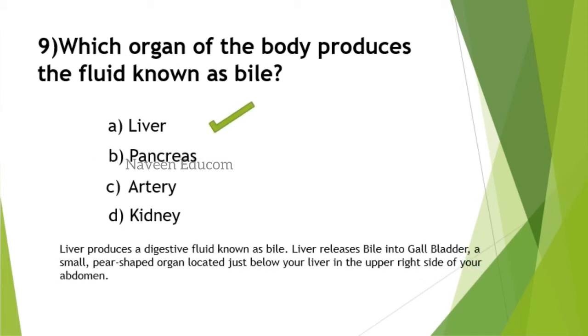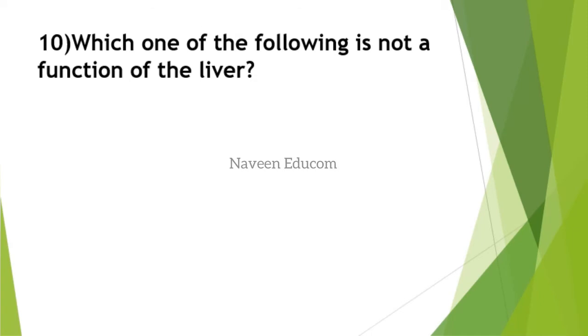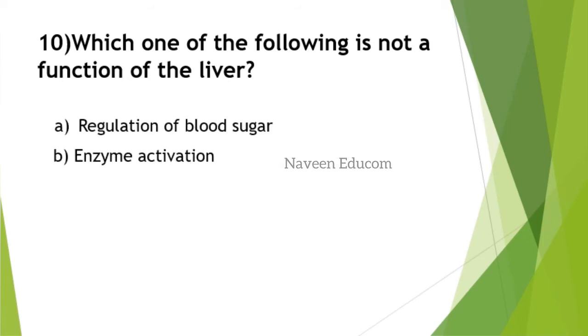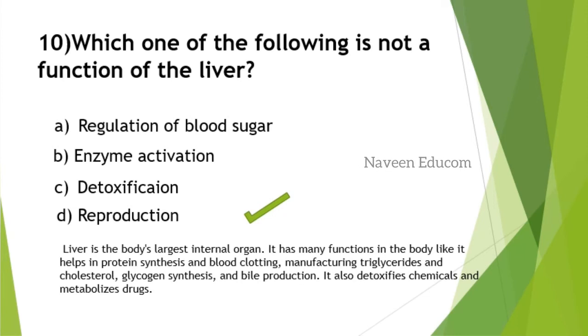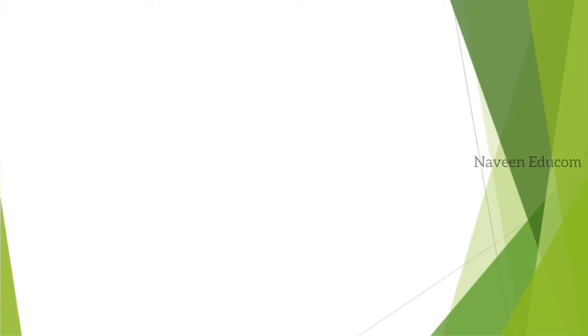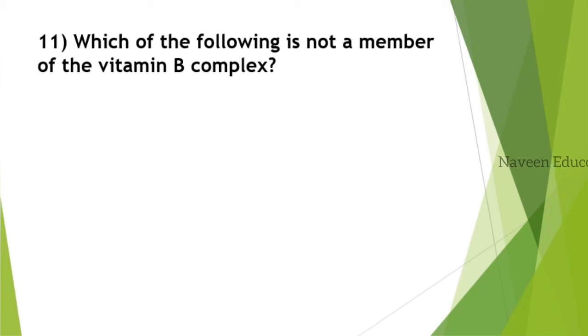Please note the other options: pancreas, artery, and kidney. If there is any fluid production, that will be an additional point. Liver produces bile and releases it into the gallbladder, a small pear-shaped organ located just below your liver in the upper right side of your abdomen. Study by adding more points regarding the options. Which one of the following is not a function of the liver? Options are regulation of blood sugar, detoxification, reproduction. Liver is the body's largest internal organ with many functions including protein synthesis, blood clotting proteins, manufacturing triglycerides and cholesterol, glycogen synthesis, and bile production. It also detoxifies chemicals and metabolizes drugs.